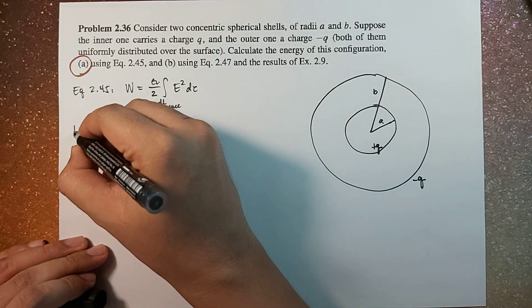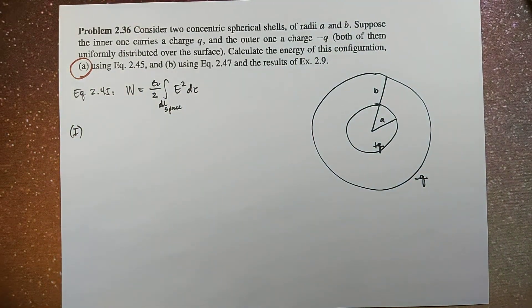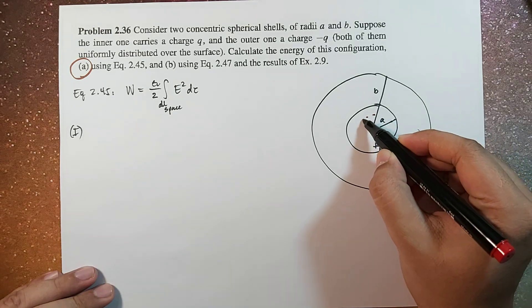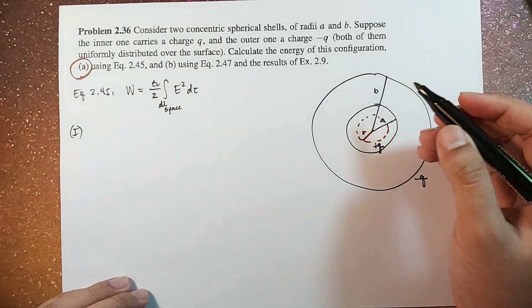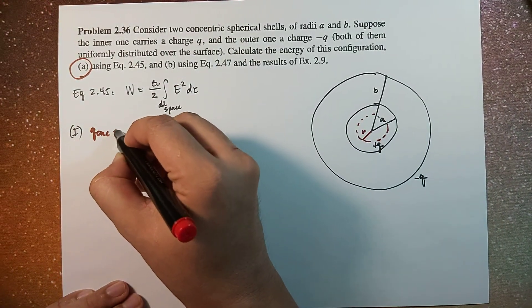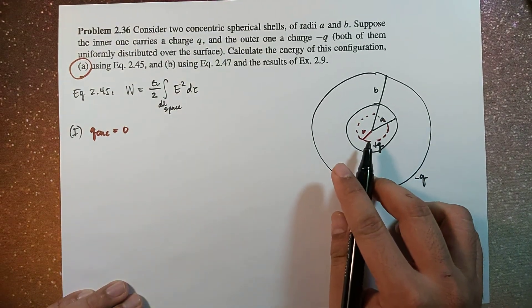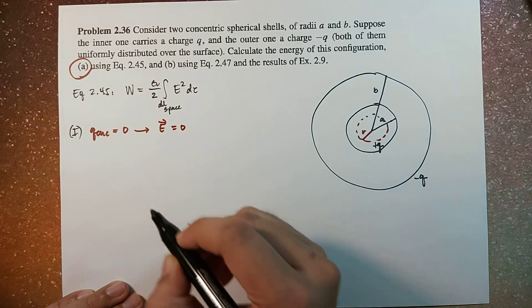The first region, so this is R for the first region, and you will notice that the enclosed charge is zero. So that means the electric field is zero.